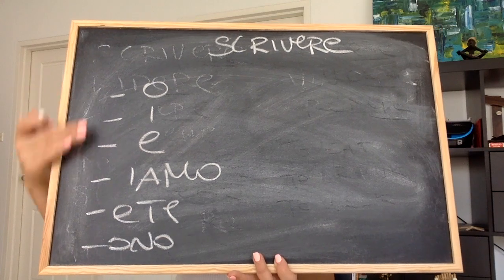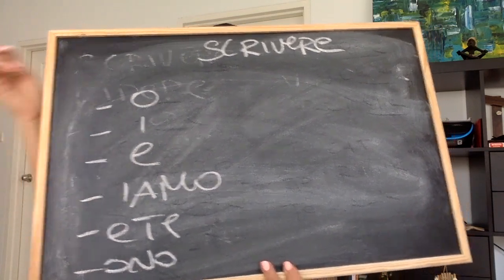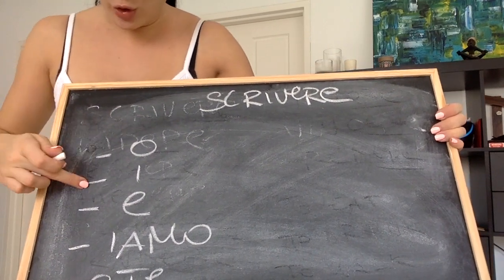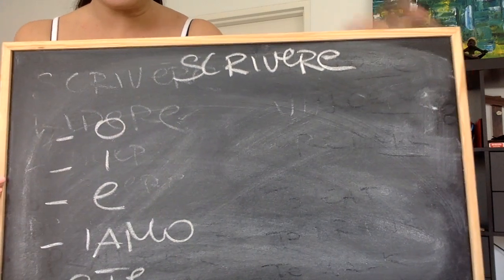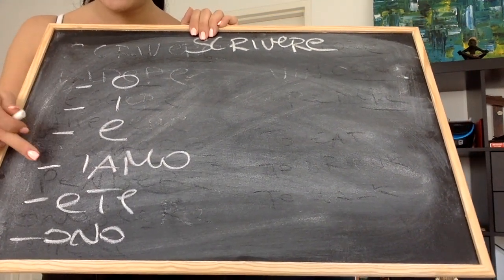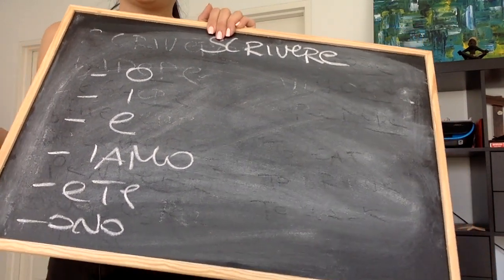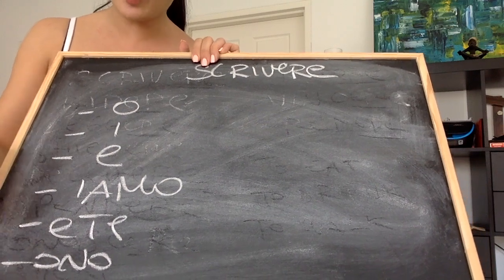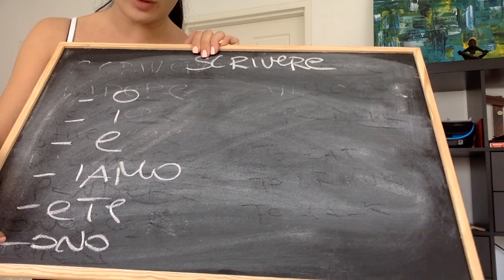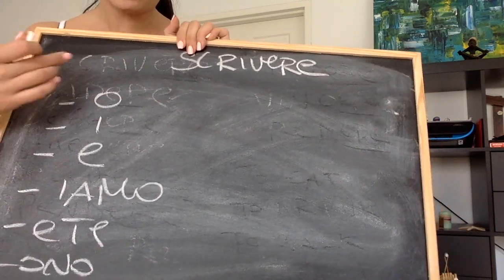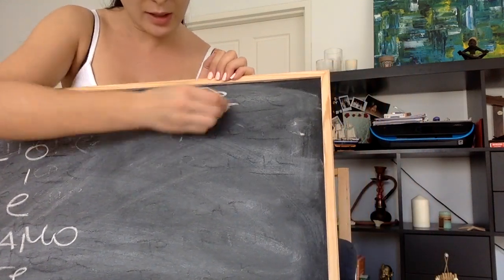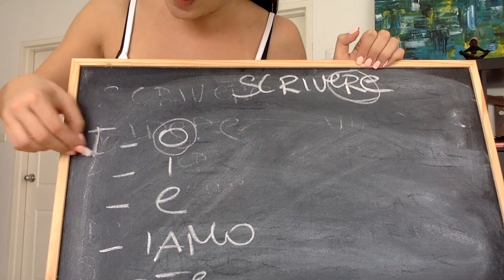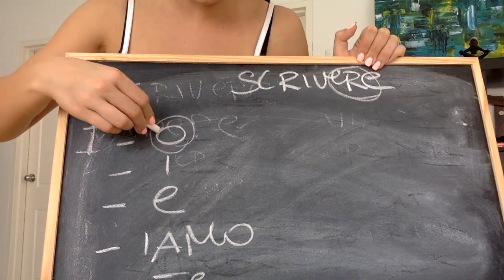In any language we have: I, you, he, she, we, you, they — which in Italian is: io, tu, lui, lei — or egliella, but just say lui or lei to avoid being very formal — noi, voi, loro. So if I have to say 'I write', I get rid of -ere and add O. The O ending corresponds to the I subject.